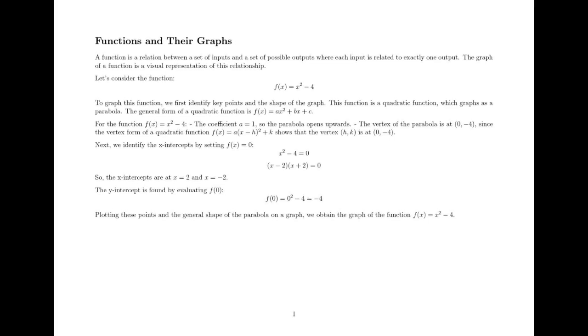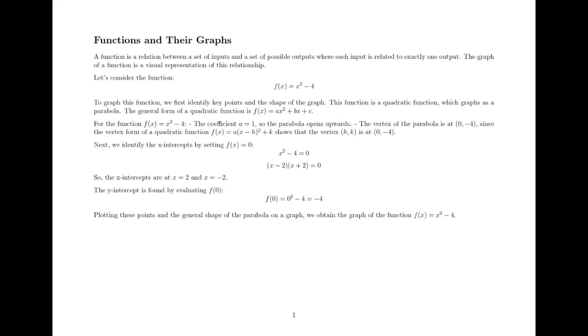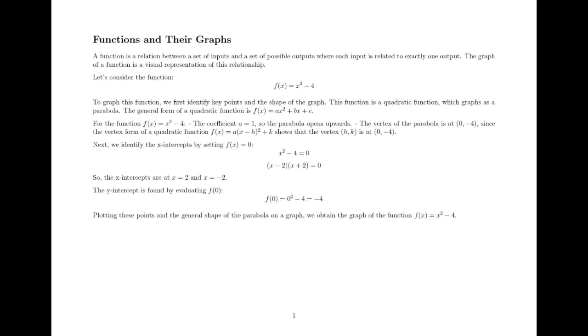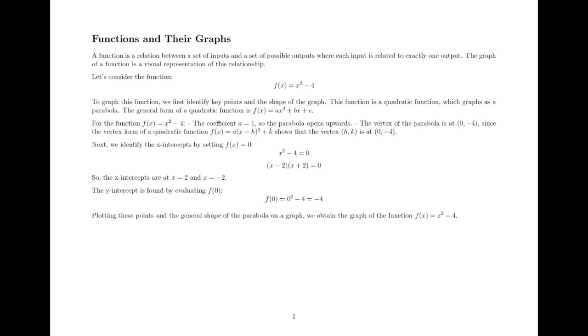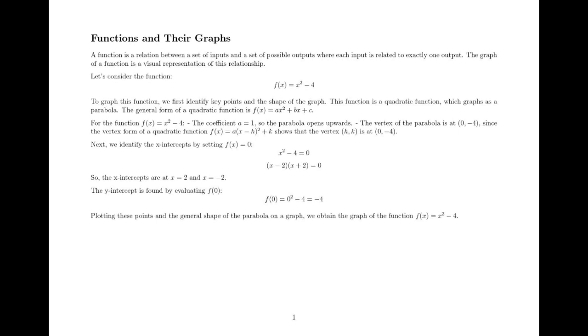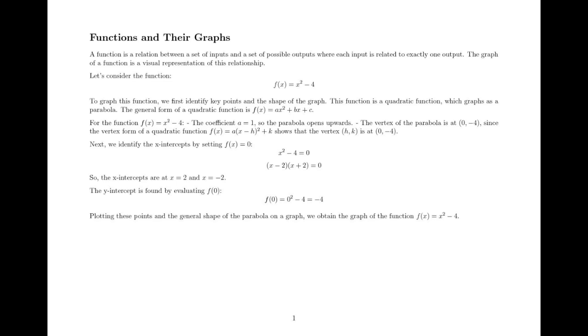The general form of a quadratic function is f(x) = ax² + bx + c. For the function f(x) = x² - 4, the coefficient a is 1, so the parabola opens upwards.